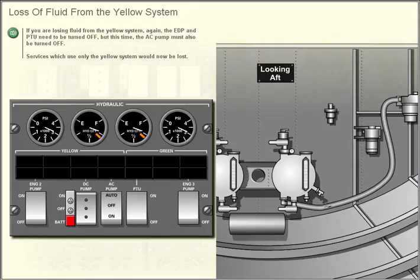Loss of fluid from the yellow system. If you are losing fluid from the yellow system, the EDP and PTU need to be turned off. But this time the AC pump must also be turned off.